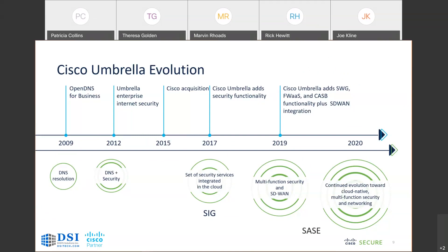If you don't know about Umbrella, it started out back in 2009 as OpenDNS, OpenDNS for Business. So it's been around for quite a bit. In late 2015, Cisco acquired OpenDNS, and then it added additional security functionality — first with the secure internet gateway in 2017, then multifunction security in 2019, that is secure web gateway, firewall as a service, cloud access security broker, and functionality integration into Cisco's SD-WAN offering. We've continued up to today with continued evolution towards a cloud-native multifunction security and networking solution.